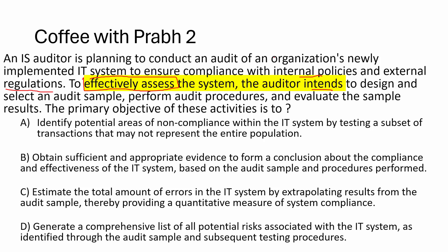The primary objective of this activity is to: Option A: identify potential areas of non-compliance by testing a subset of transactions that may not represent the entire population. Option B: obtain sufficient and appropriate evidence to form a conclusion about compliance and effectiveness of the IT system based on audit sample and procedures performed. Option C: estimate the total amount of error by extrapolating results from the audit sample. Option D: generate a list of potential risks identified through audit sampling.